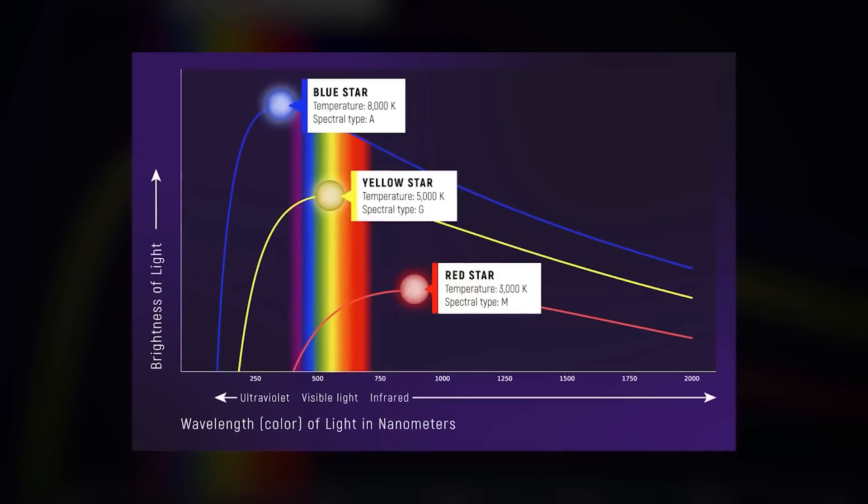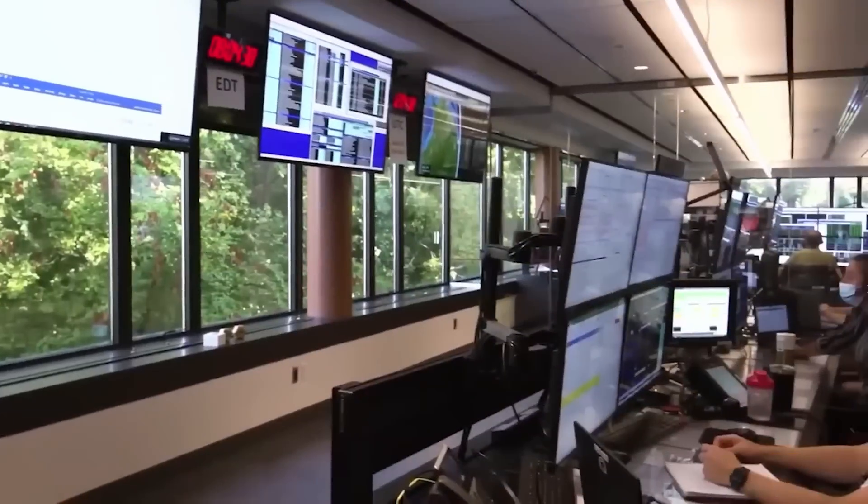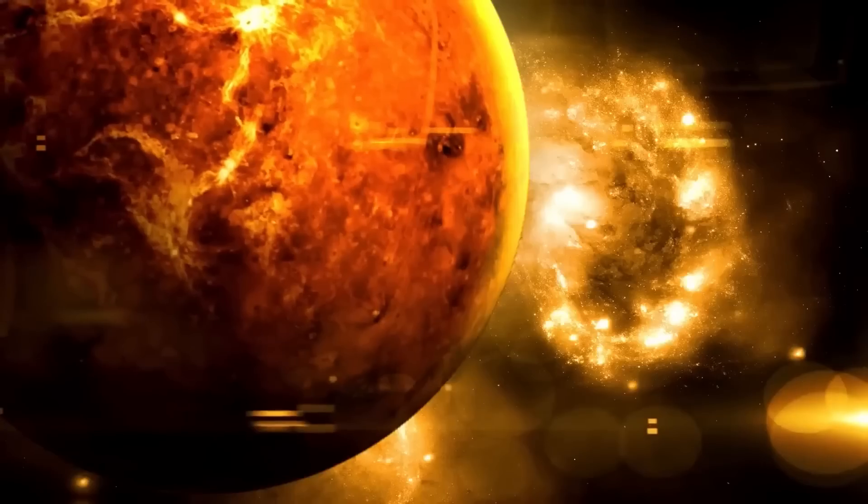However, despite these harsh conditions, Proxima b receives sufficient sunlight from its star, keeping the planet warm enough to maintain liquid water, a crucial ingredient for life as we know it.